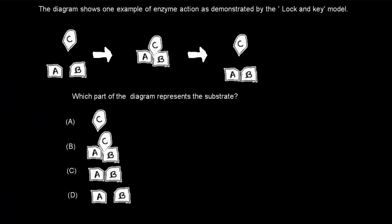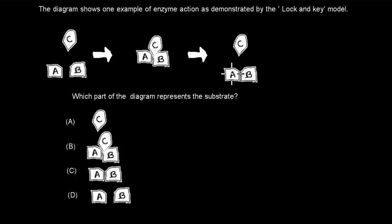The next question: The diagram shows one example of enzyme action as demonstrated by the Lock-and-Key model. We have A and B coming together with C, forming a complex, and then something else happens. Which part of the diagram represents the substrate? Option A, B, C, or D. Pause the video.